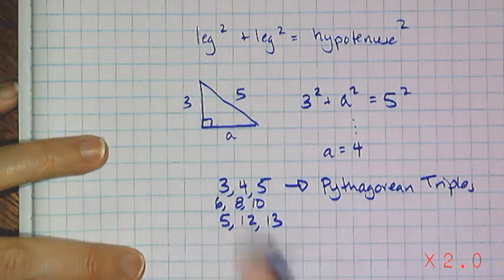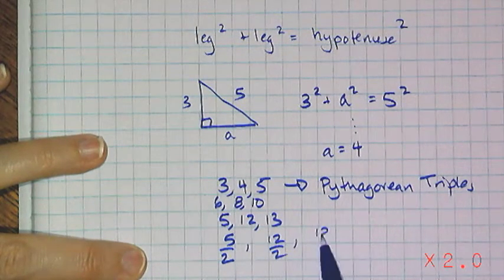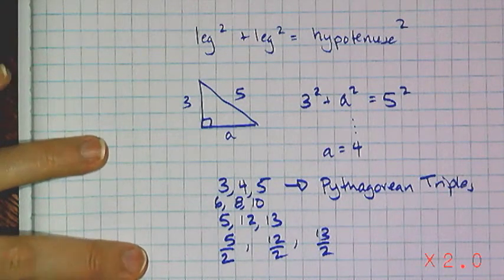If I wanted to make it fractional, I can say like 5 halves, 12 halves, and 13 halves. That will also give me something that's going to work with the Pythagorean Theorem.